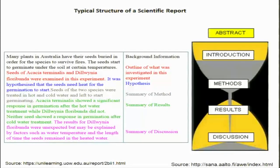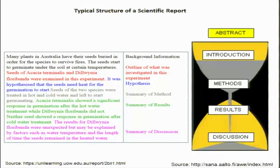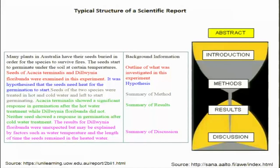The hypothesis is testable in a lab. The method summary describes how you tested the hypothesis: seeds of two species were treated in hot and cold water and left to start germinating, mimicking fire conditions in the wild. The results summary: one of the two plant seeds showed a significant response in germination after hot water treatment whereas the other did not, suggesting fire could be the trigger for germination. Neither seed showed a response after cold water treatment, as that did not elicit any signaling to the seed to germinate.